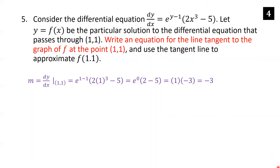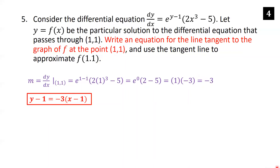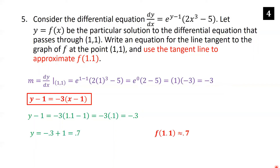Using slope negative 3 and point (1, 1), the tangent line in point-slope form is: y minus 1 equals negative 3 times (x minus 1). To approximate f(1.1), we plug in x equals 1.1. 1.1 minus 1 is 0.1, so we get negative 3 times 0.1 equals negative 0.3. Adding 1 to each side gives y equals 0.7. So f(1.1) is approximately 0.7.